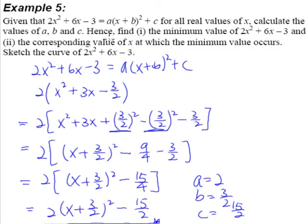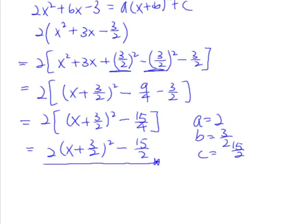Let's take a look at the next part: find the minimum value of this quadratic equation and the corresponding x value at which the minimum occurs. After completing the square, we are given useful information such as the coordinate of the minimum point. By looking at the completed square form, you should know this is a minimum curve because it has a positive x squared — it is a U-shaped curve.